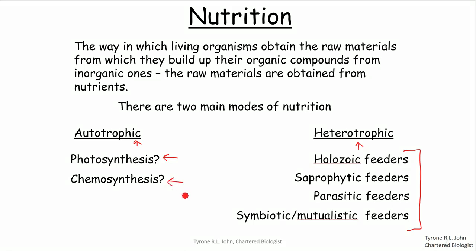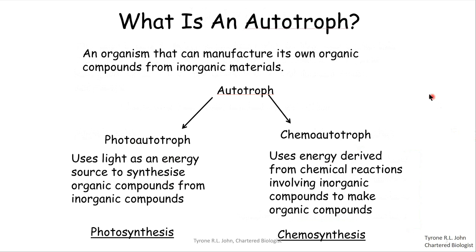Autotrophic nutrition involves photosynthesis, which plants undertake, and chemosynthesis, which many bacteria carry out. An autotroph is an organism that can manufacture its own organic compounds from inorganic ones — 'auto' meaning self and 'troph' meaning feeding, so these are often known as self-feeders.